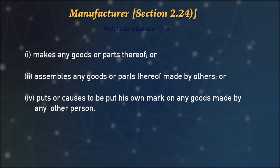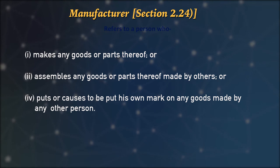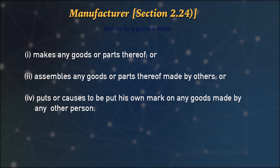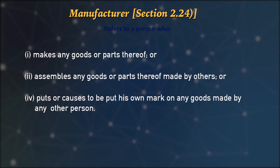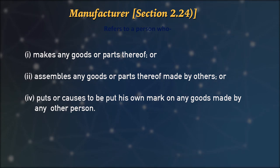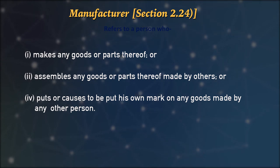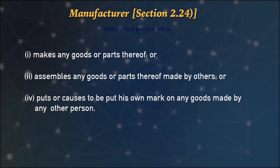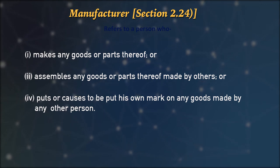We now come to the 'manufacturer.' When we refer to goods, a manufacturer refers to a person who makes the goods, either fully or partly, or assembles any goods or parts thereof. He is also a manufacturer. Or if he puts or causes to put his own mark on any goods made by another person, then he also comes under the definition of manufacturer.